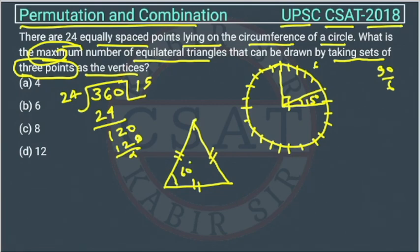With 3 points, we are getting 1 equilateral triangle. With 3 points, we are getting 1 equilateral triangle, because they are equally spaced.